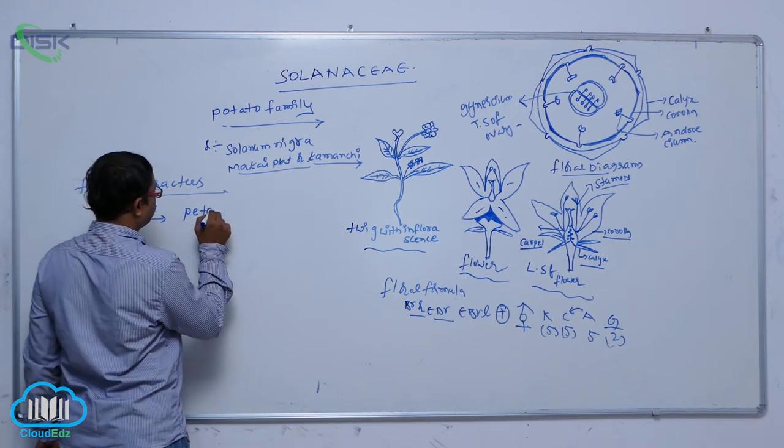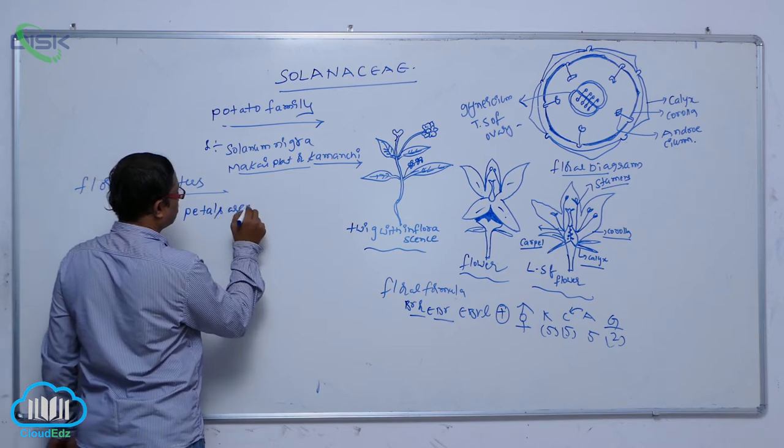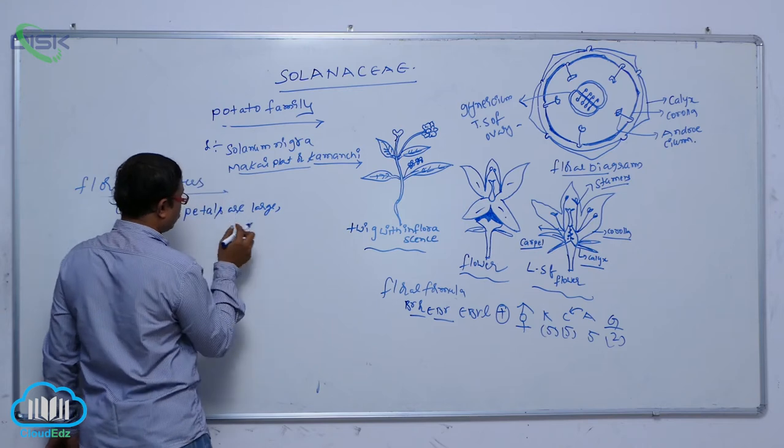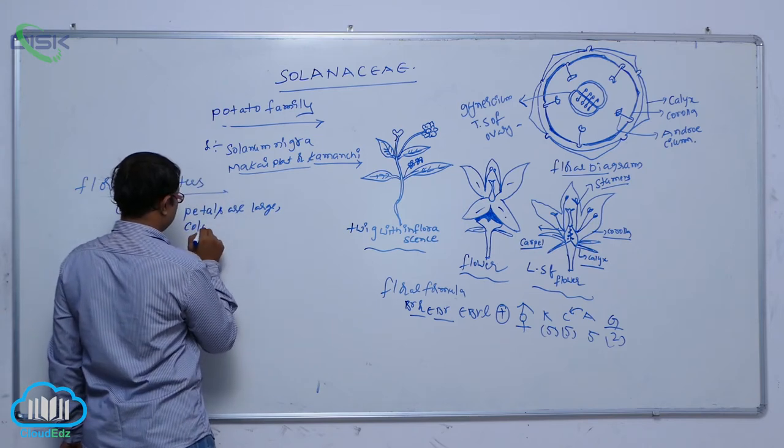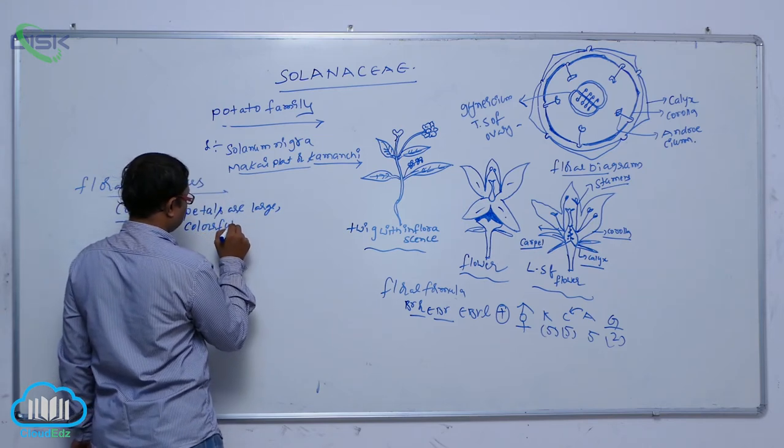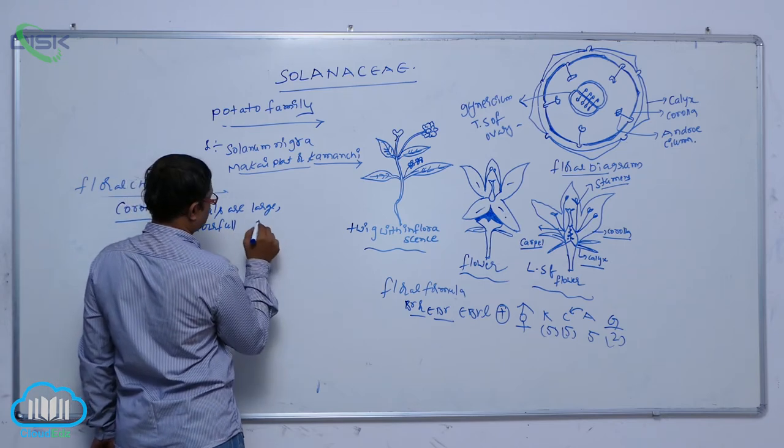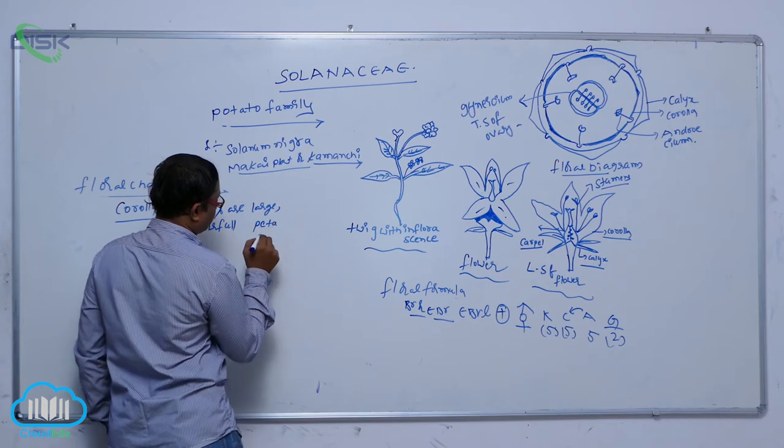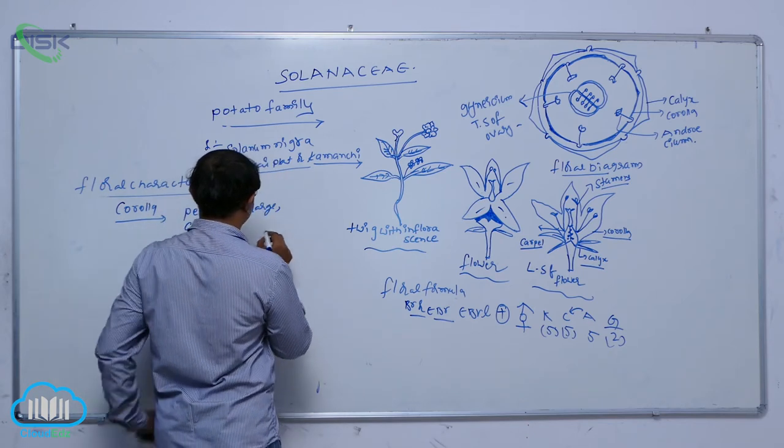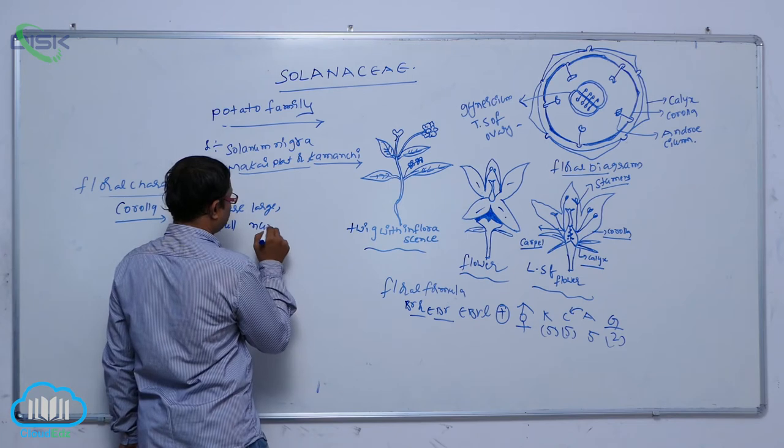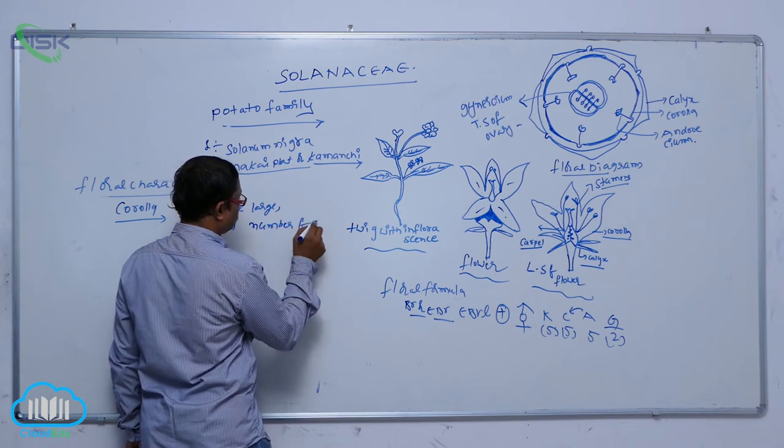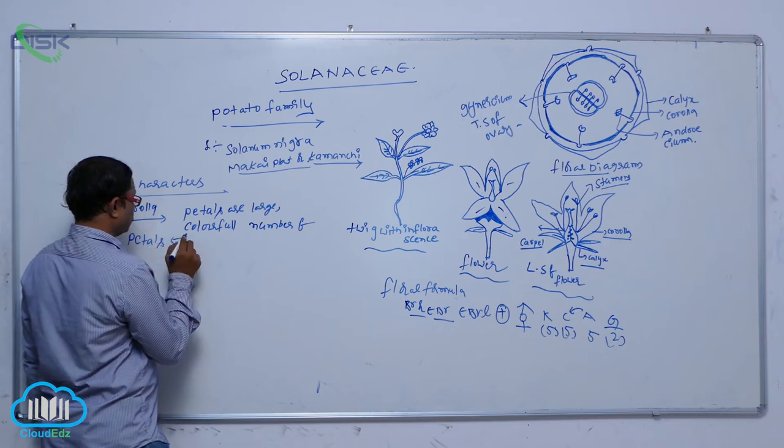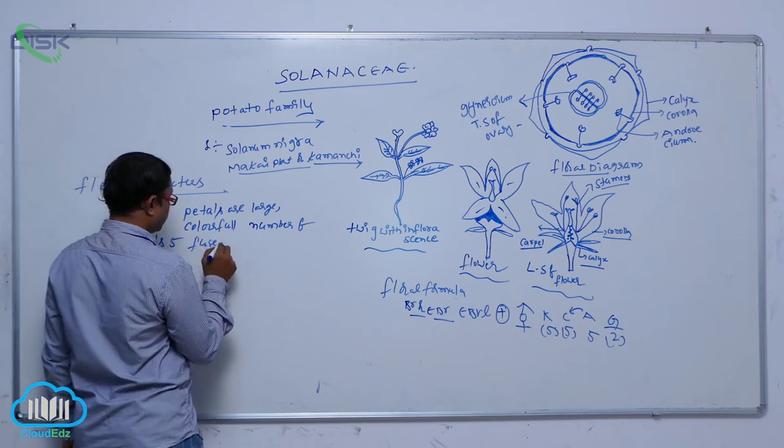The corolla petals are large and sometimes small and colorful. The number of petals are five. The physical condition is gamopetalous.